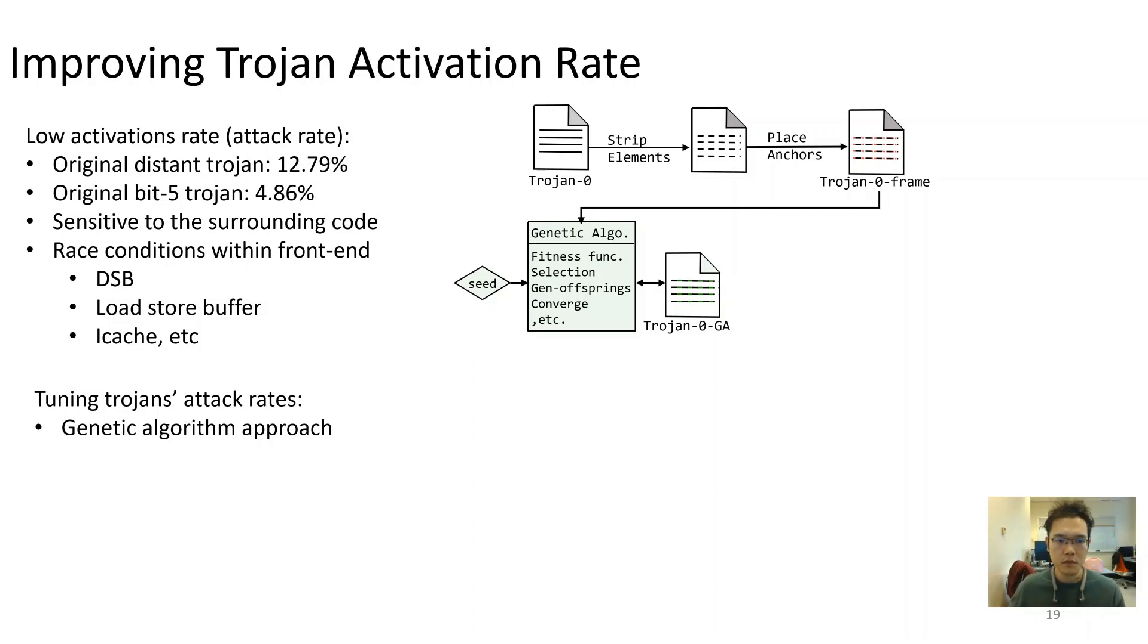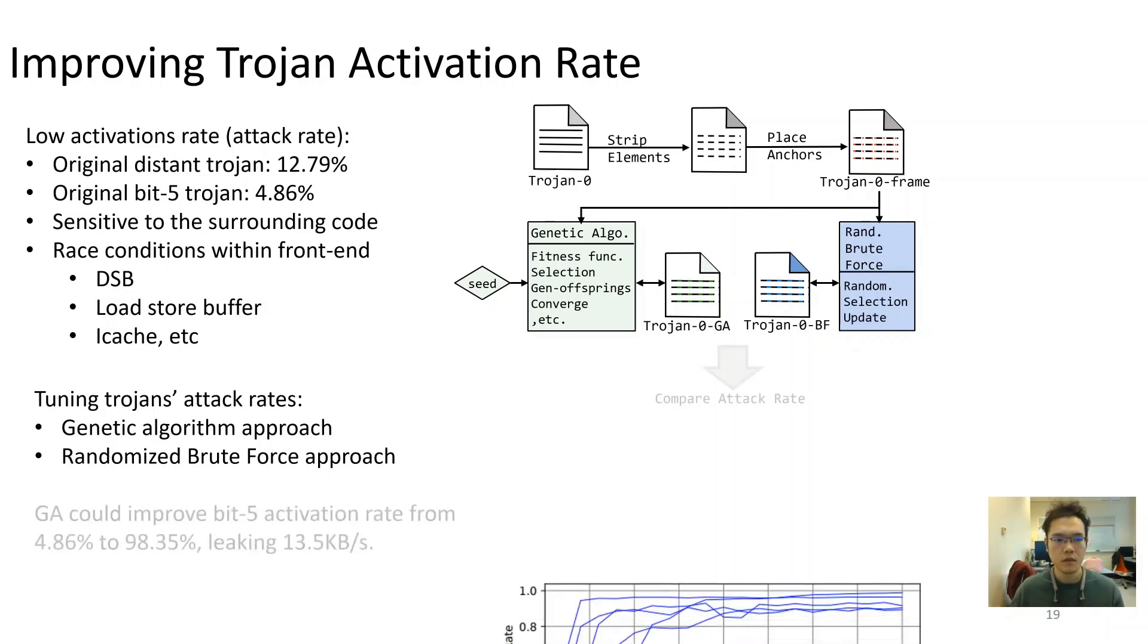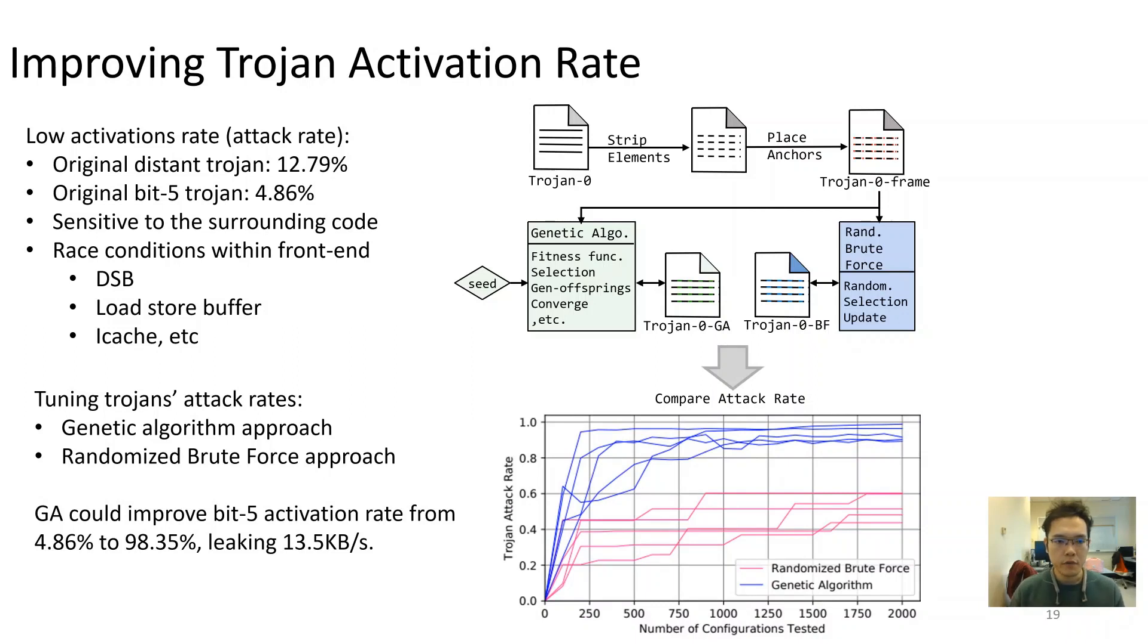Besides this approach, we also create a brute force optimization that randomly inject artifacts at the same potential places. By comparing the performance between the optimized trojans from these two approaches, we find that genetic approach can quickly find optimal instance with high activation rate.